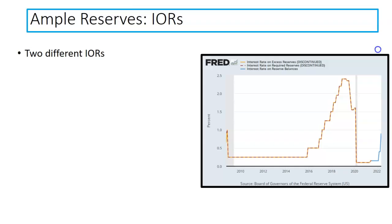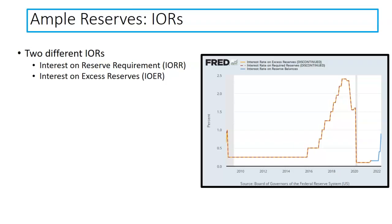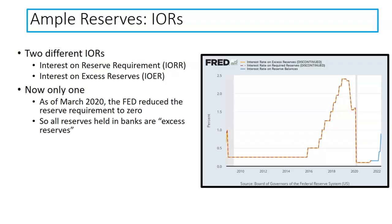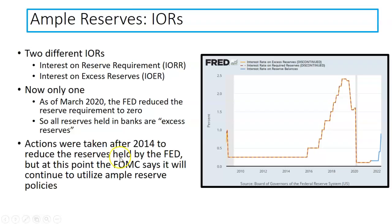Originally there were two different interest on reserves: interest on required reserves and interest on excess reserves. As of 2020, because of the COVID pandemic and the sharp decline in interest rates to stimulate the economy, the Federal Reserve changed reserve requirements to zero. This essentially meant that all reserves held by a bank were, by definition, excess. So as of now we just have interest on reserves — you can see in 2021 it goes to blue because that's just interest on reserves; the required and excess categories are discontinued. Actions were also taken from 2014 to reduce the Fed's holdings of securities, though it didn't quite decrease the ampleness entirely.